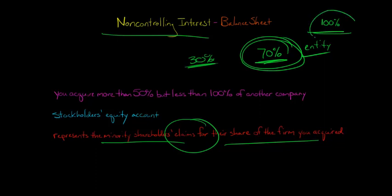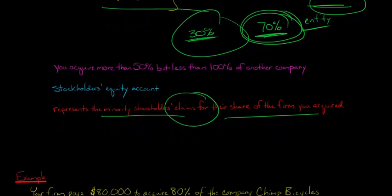their claims against the share of that firm that you've acquired. Even though you're taking 100% of their assets and liabilities, this non-controlling interest equity account is saying there are some other people out there who have claims against this firm that you've acquired.